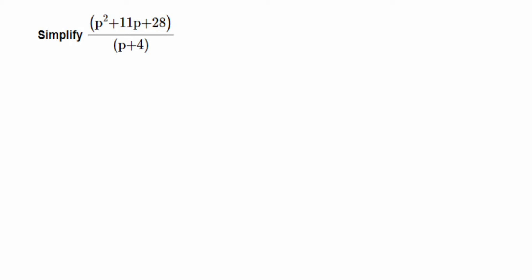Here I am doing a question on factorization. The question is: simplify (p² + 11p + 28) / (p + 4). To simplify means we have to solve this further, but we cannot just cancel p and p², or 4 and 28 directly. So we have to first factorize the numerator — we cannot factorize the denominator.